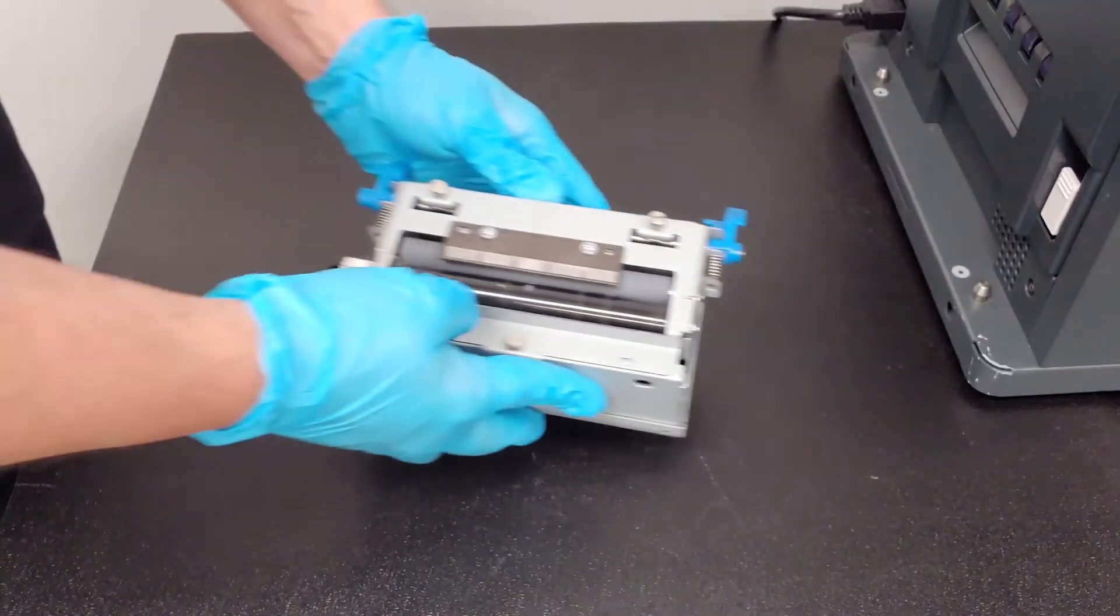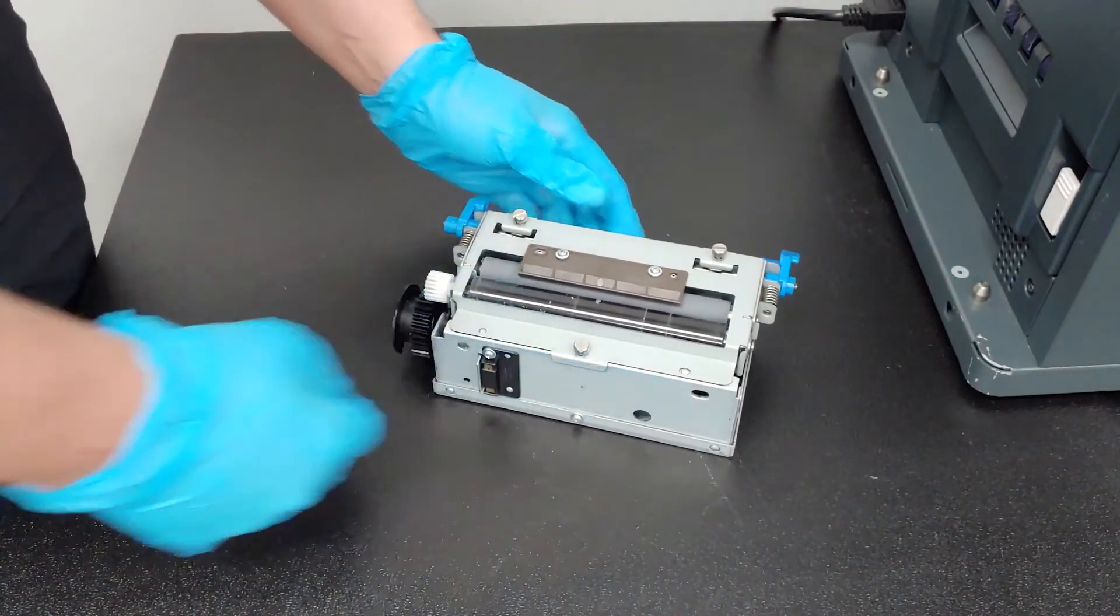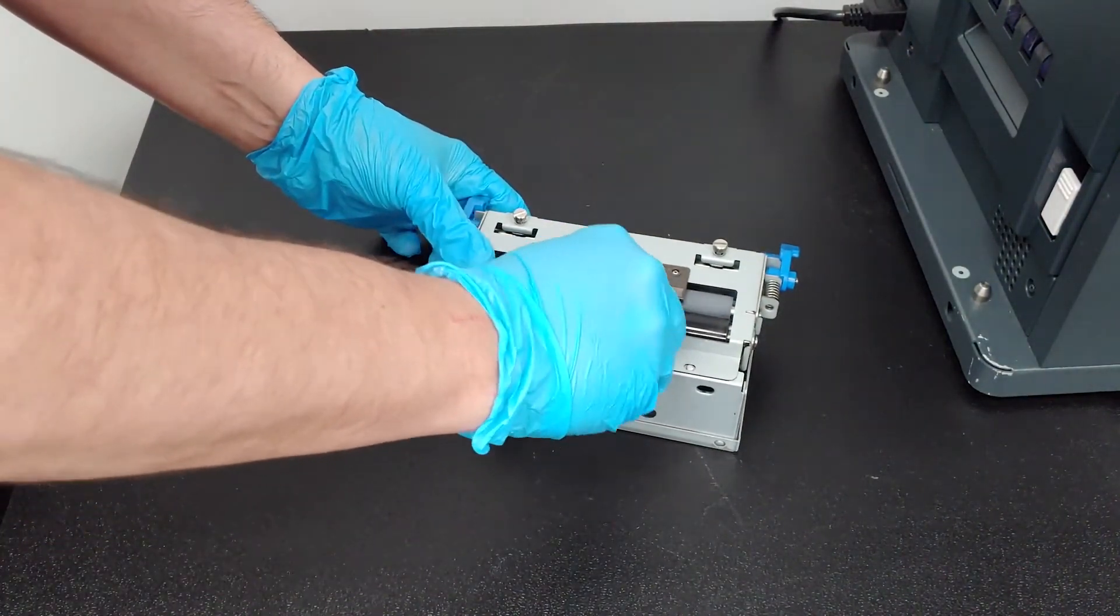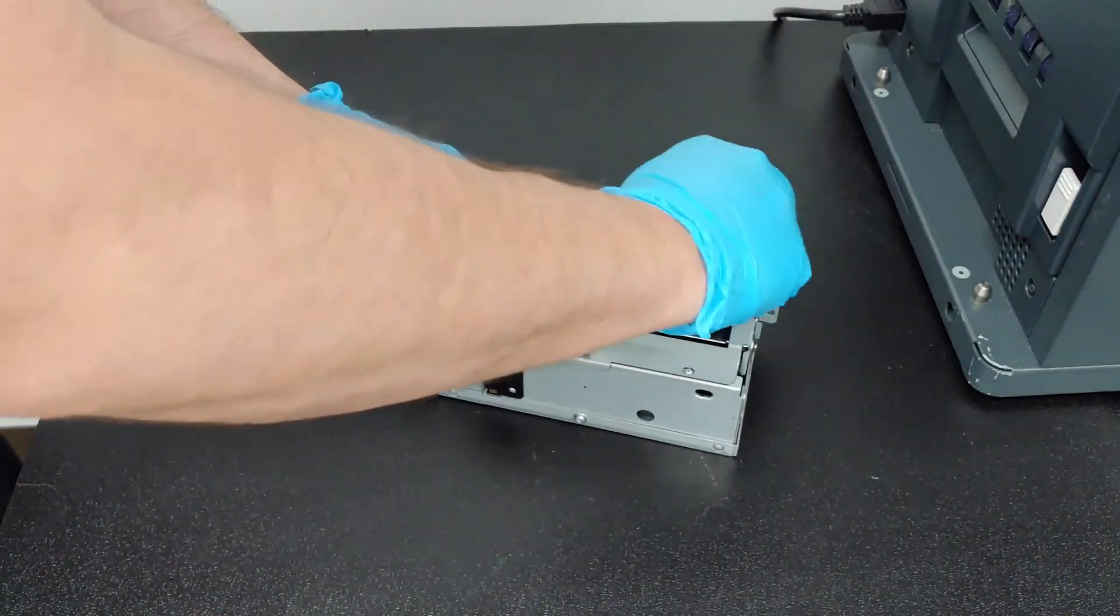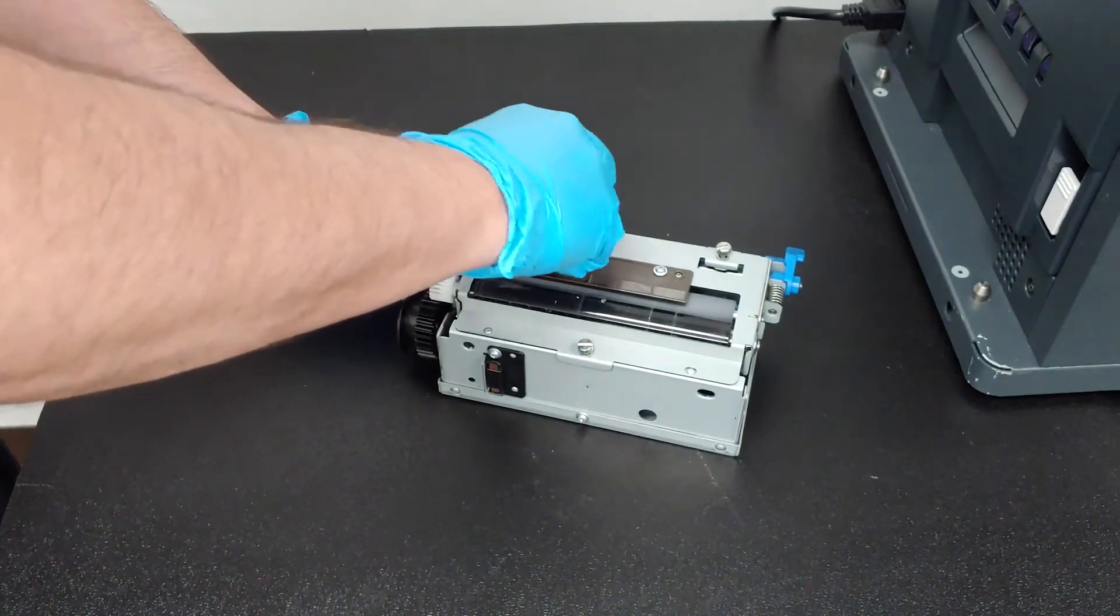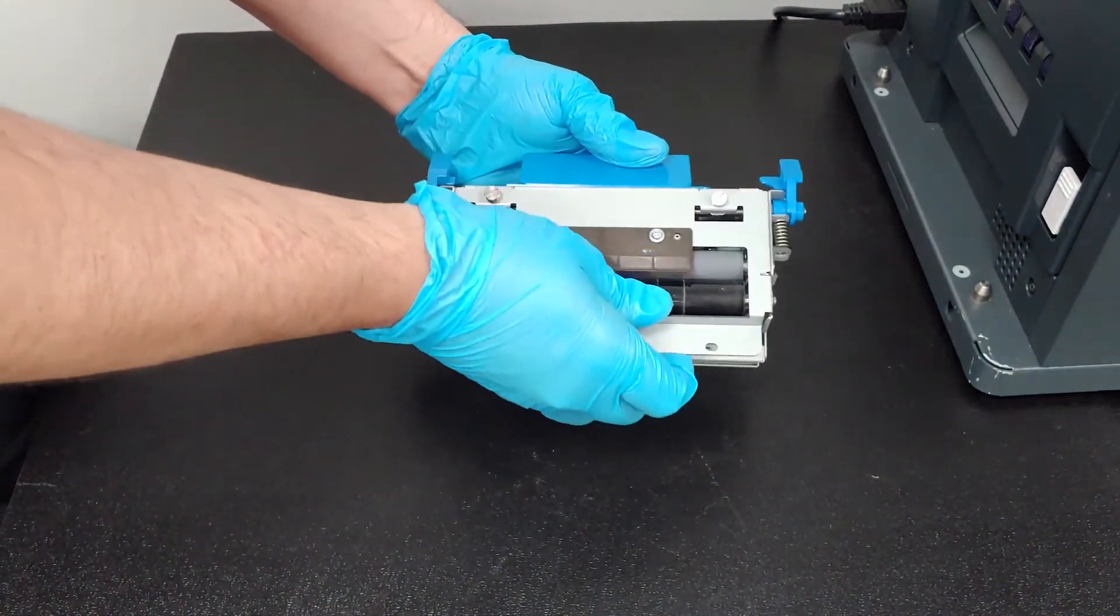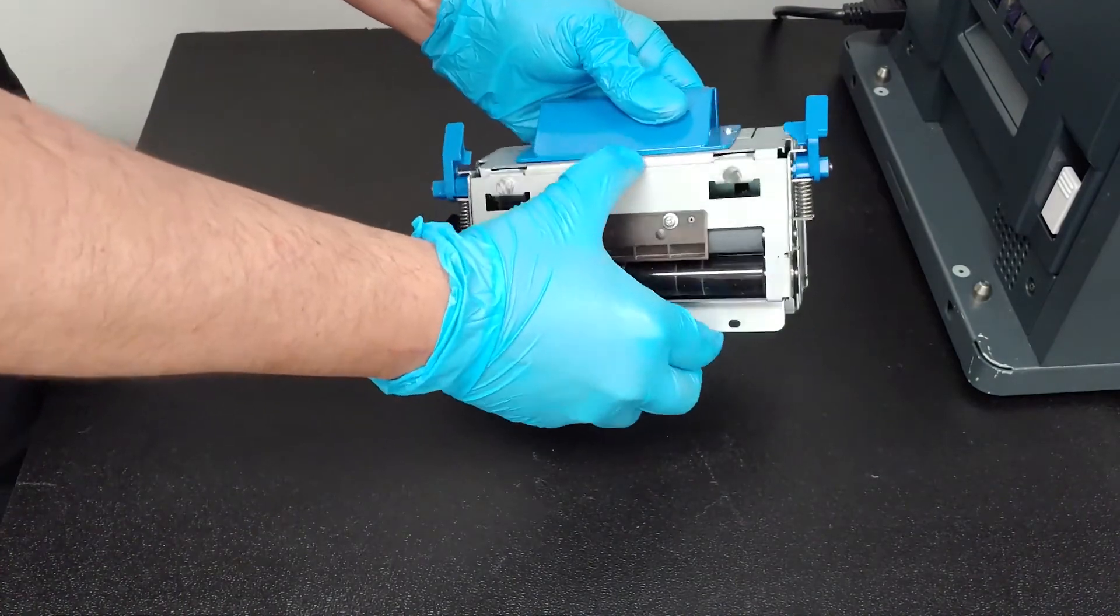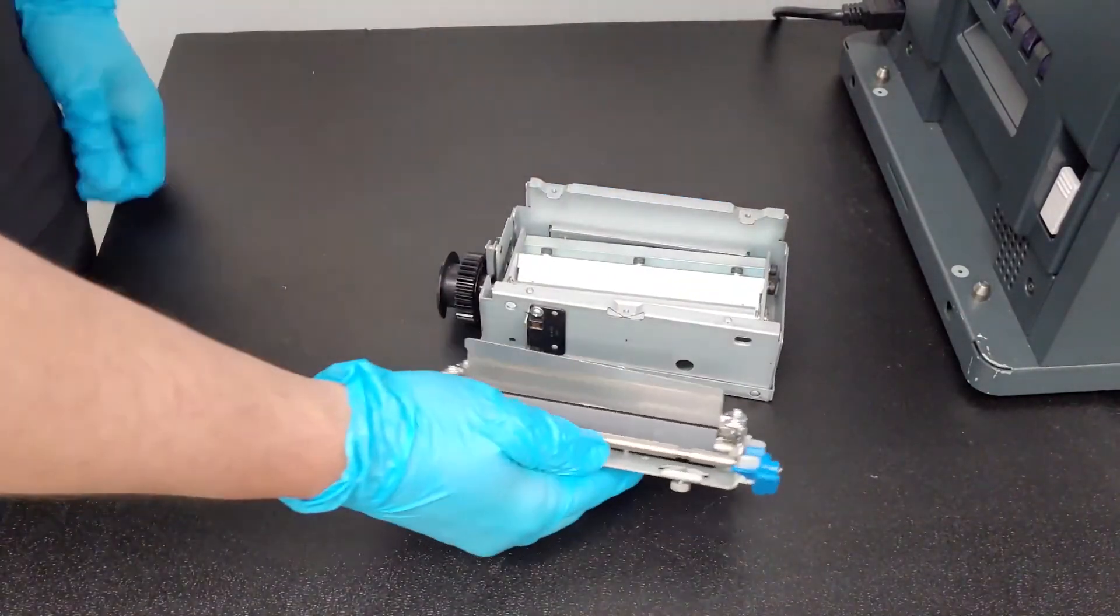Lay the cutter assembly on its side so that the side with all three knurled thumb screws is facing up. Loosen all three screws until the metal cover and roller assembly can be lifted away. The screws are captive and will not fall off the plate.